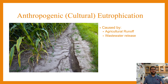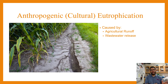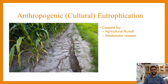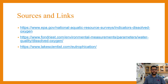Cultural eutrophication sources include agricultural runoff, wastewater release, and anything that leads to high amounts of sediments and nutrients getting into the water — that's anthropogenic or cultural eutrophication. There are some more sources to look into; hopefully this was helpful. Thank you very much.